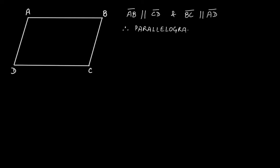The definition of a parallelogram is: a parallelogram is a type of quadrilateral whose opposite sides are parallel to each other. Now looking at the angles — angle D and angle B, and angle C and angle A.